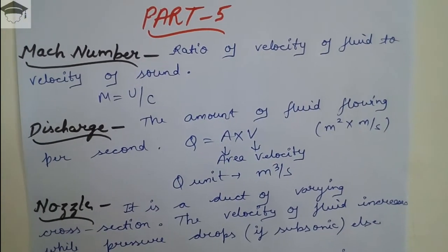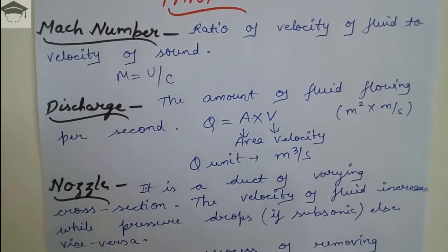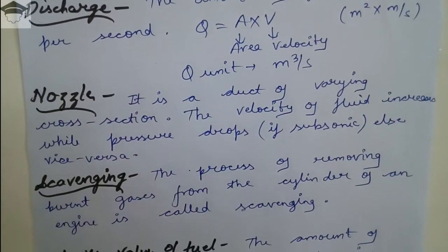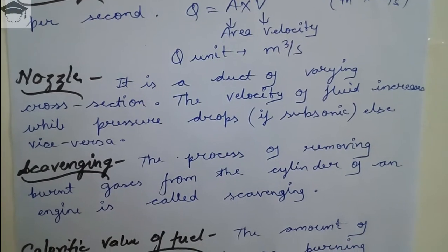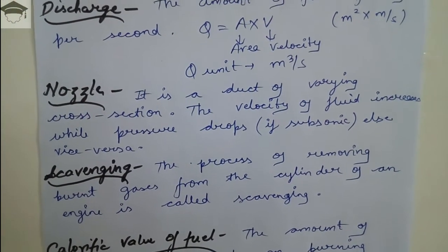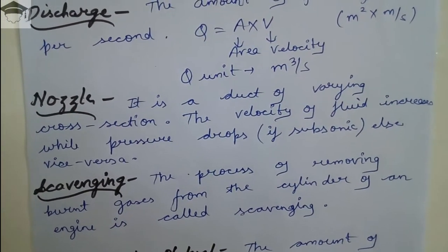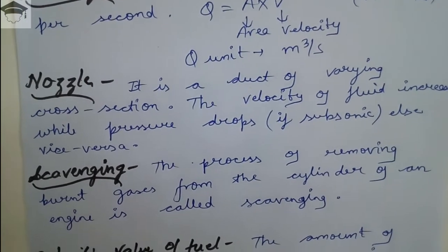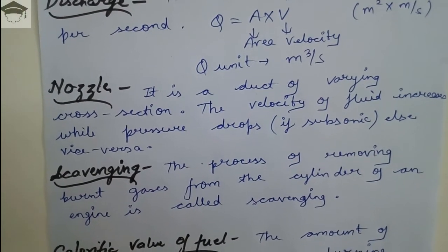Nozzle: it is a duct of varying cross-section. The velocity of fluid increases while the pressure drops if the fluid flow is subsonic. If the fluid flow is supersonic, then the velocity of fluid will decrease and the pressure will increase.